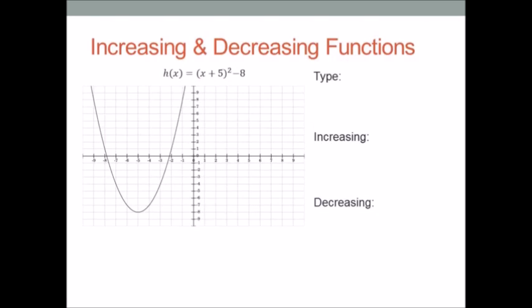Hi there, it's me Mr. B. Let's find the increasing and decreasing intervals for the function h of x equals x plus 5, all squared, minus 8. Let's fill in the type — this is quadratic, because of the squared term and because the graph looks like a U. Remember, I always go from left to right when doing increasing and decreasing functions.